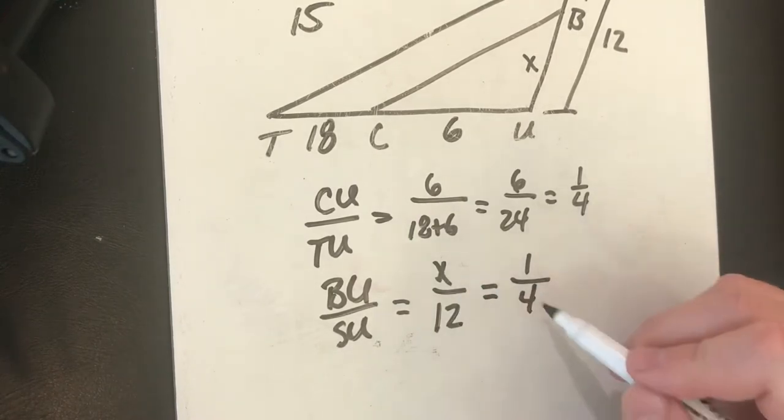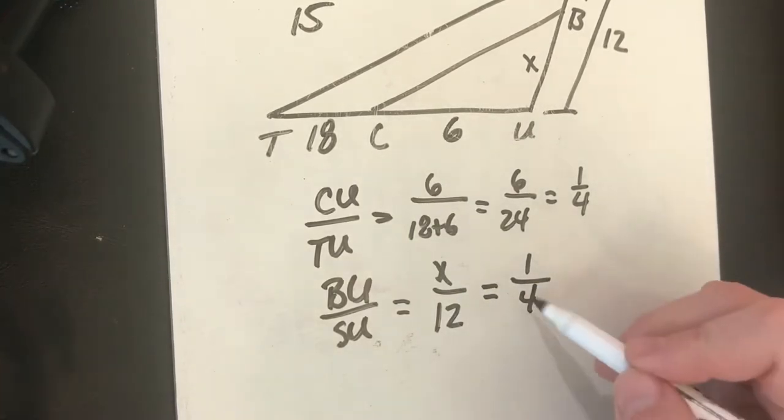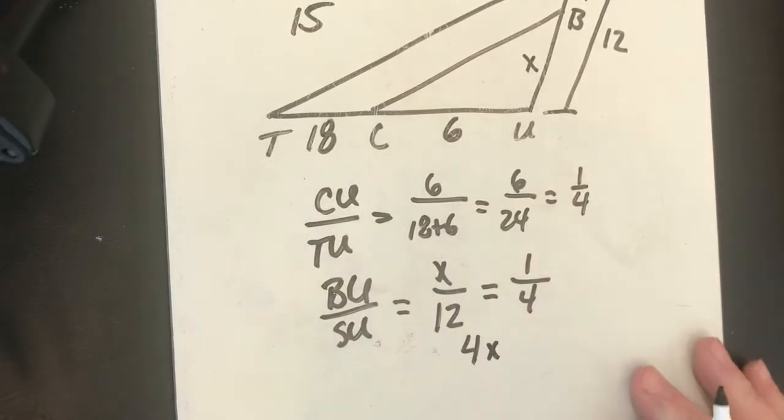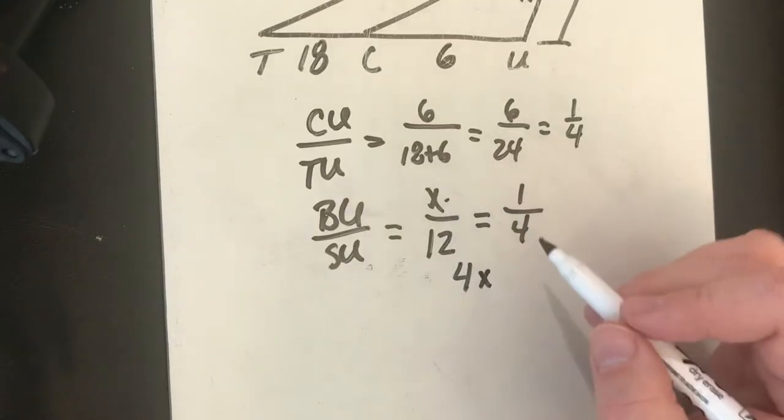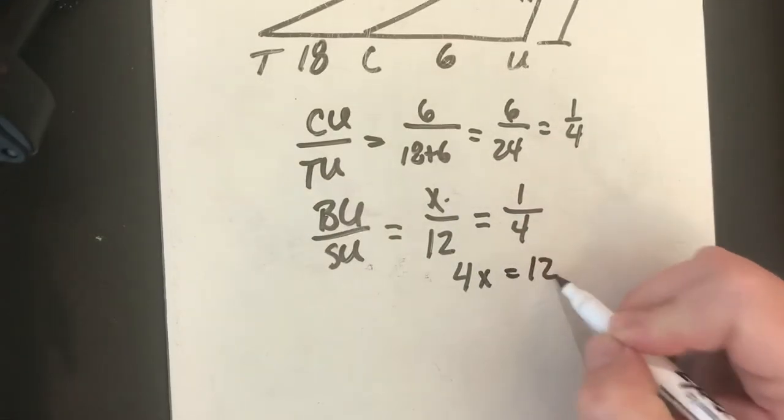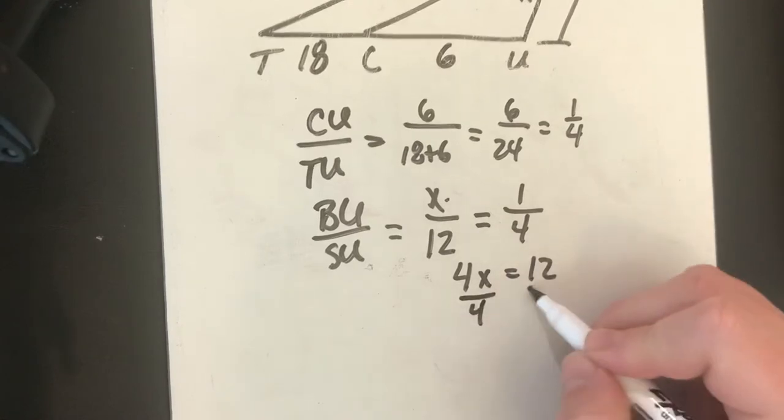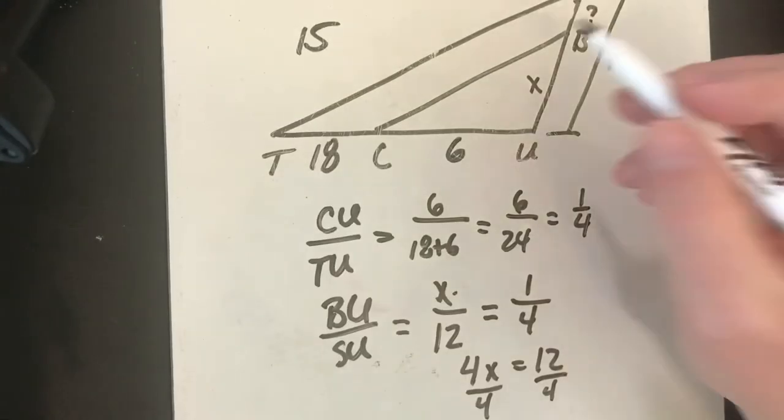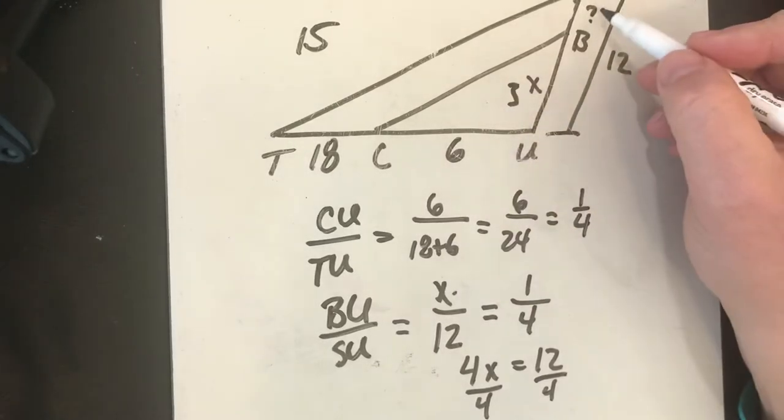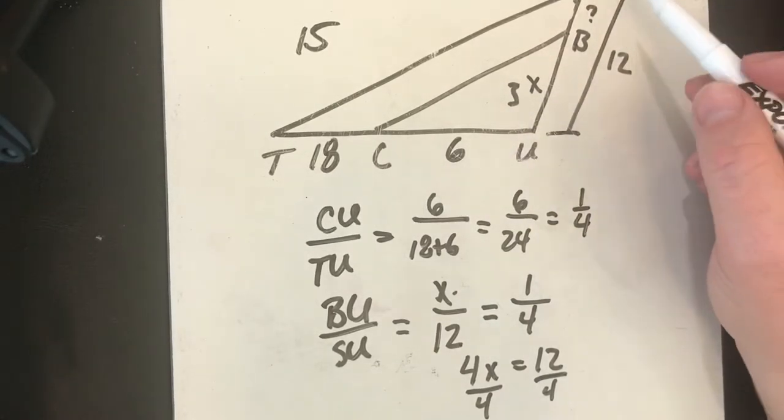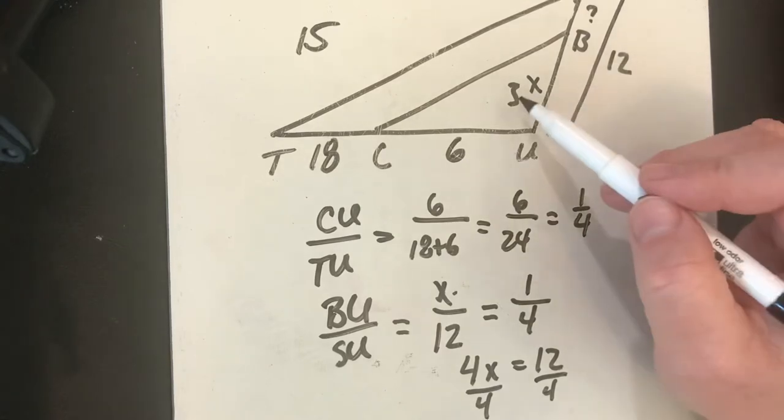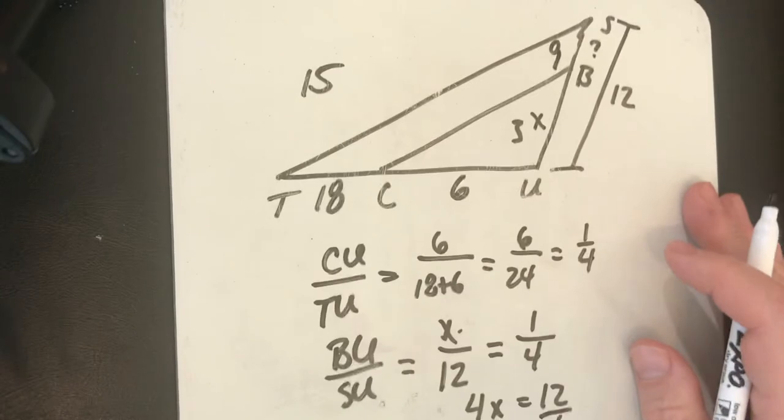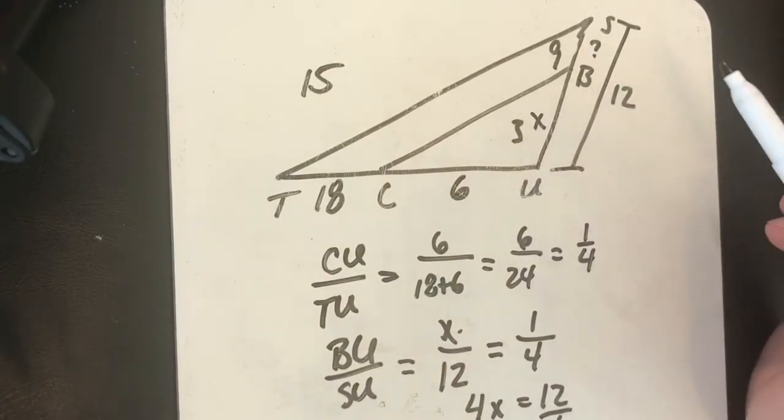So now I can solve this proportion by cross multiplying. 4 times x is equal to 12 times 1. If I divide both sides by 4 I get x is equal to 3 so this side is 3. Well I'm trying to find SB, well SB is just 12 minus 3 or SB is 9 so the length of SB has to be 9.